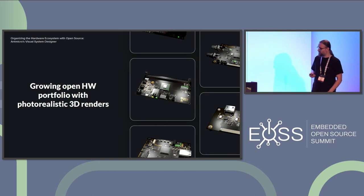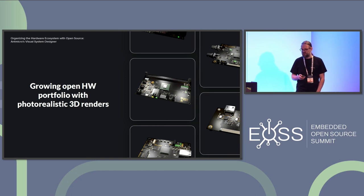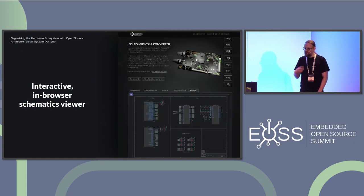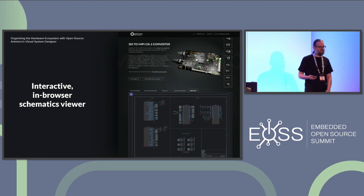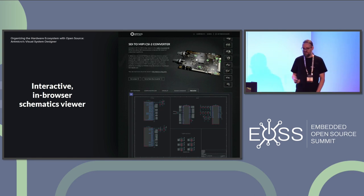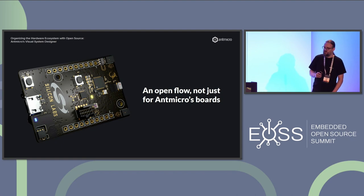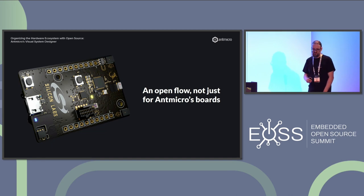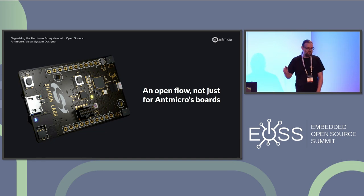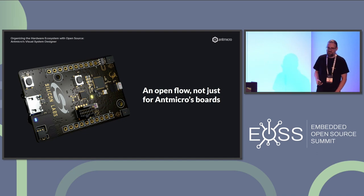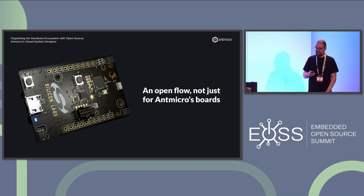We have photorealistic 3D renders — these are not photos, these are renders of boards. The entire portal is built around the idea of mining this data. You can browse the schematics interactively using a really cool tool called KiCanvas. You can view schematics in the client without installing anything. You can look at stackups. You can also use this for other boards — not just AntMicro boards. For example, a Silicon Labs board where we found a BOM and Gerber files on a forum, so we could visualize it too, because the flow is completely portable to anything.